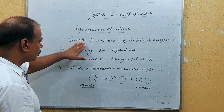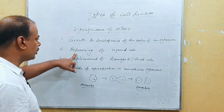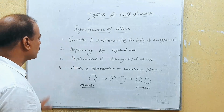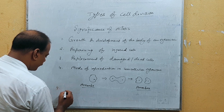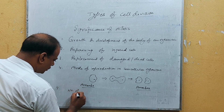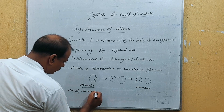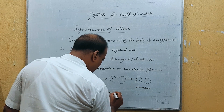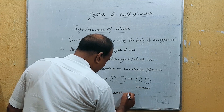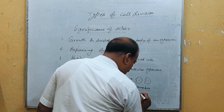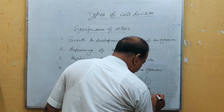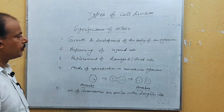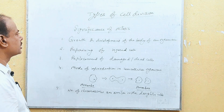So, the significance of mitosis includes: growth and development of the body; repairing of injured cells; replacement of damaged or dead cells; mode of reproduction in unicellular organisms; and number five — the number of chromosomes remains similar in the daughter cells. These are the important significance of mitosis.